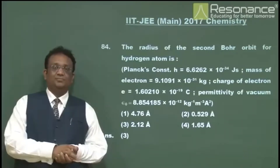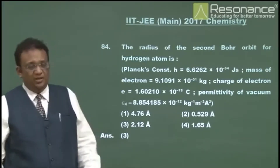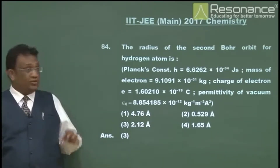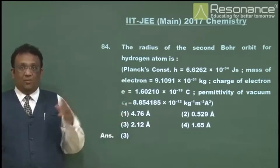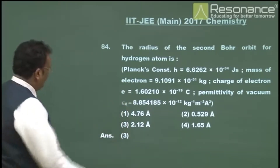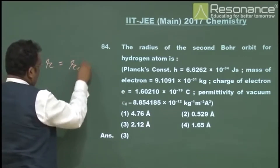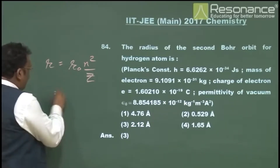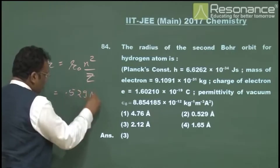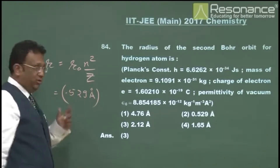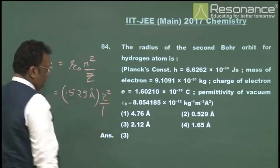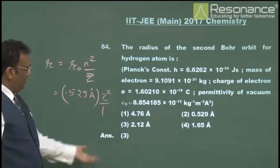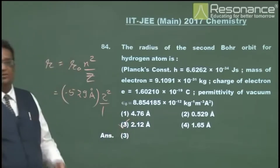Question 84: the radius of the second Bohr orbit of a hydrogen atom. Using the formula R = R₀·n²/Z, where R₀ = 0.529 Ångströms (the first Bohr orbit radius of hydrogen), n = 2, and Z = 1. So the answer is 0.529 × 4 = approximately 2.116 Ångströms — option 3 is the answer. Straightforward.